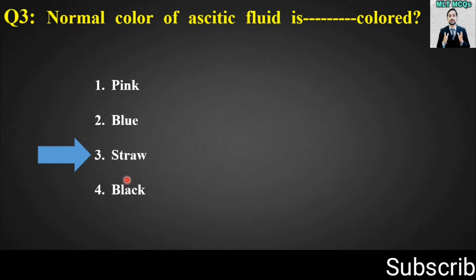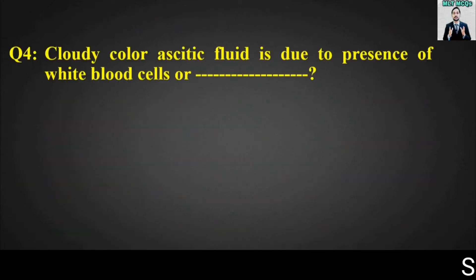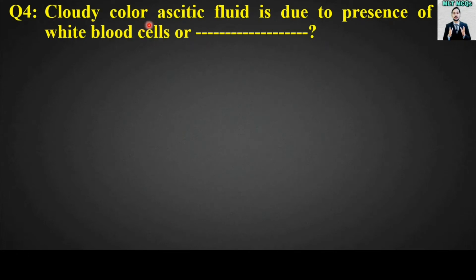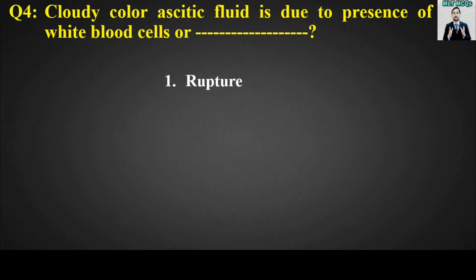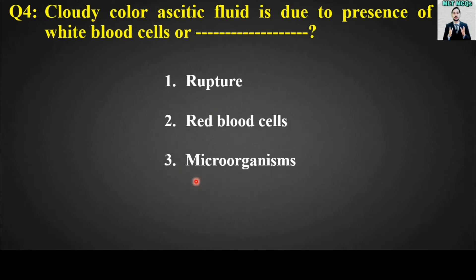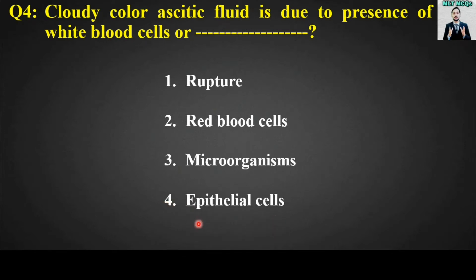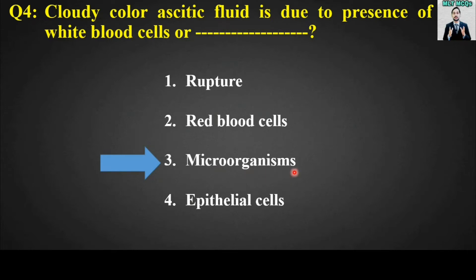Normal color of ascitic fluid is straw colored. MCQ number four is: cloudy color ascitic fluid is due to presence of white blood cells or blank. Options are: ruptured red blood cells, microorganisms, or epithelial cells.